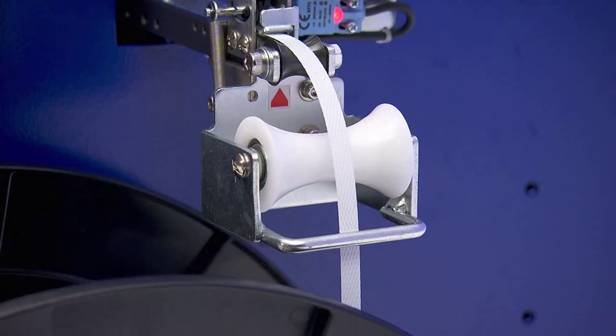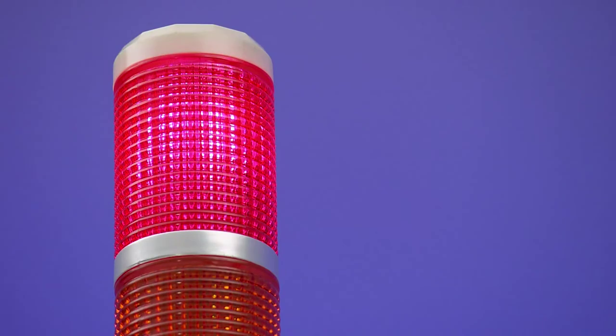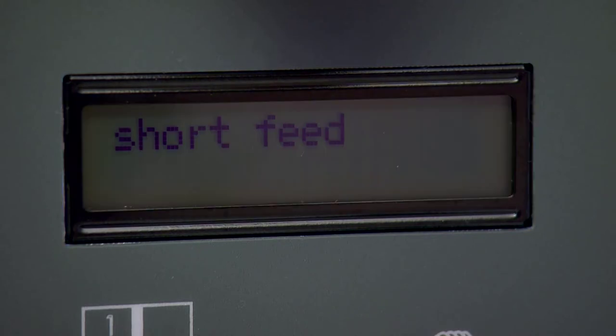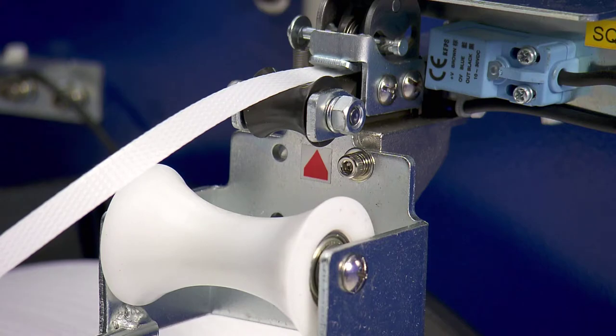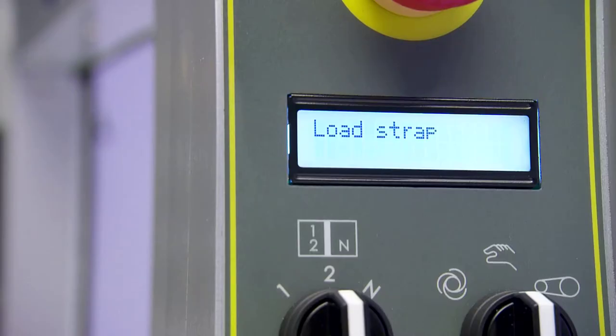The TRS-700 also features a short feed sensor which detects when the coil of strapping is empty. The short end strap is then automatically ejected from the feed mechanism, leaving it ready for reloading.